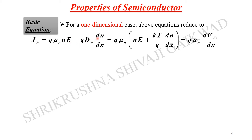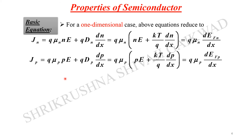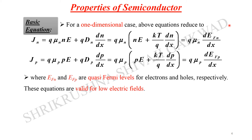For the one-dimensional case, J_n = q·mu_n·n·E + q·D_n·(dn/dx). Substituting D_n = (kT/q)·mu_n and rearranging the terms, this gives J_n = q·mu_n·n·(dE_fn/dx), where E_fn is the quasi-Fermi level for electrons. Similarly, an analogous equation can be written for holes using the quasi-Fermi level E_fp.